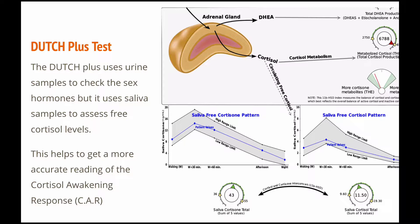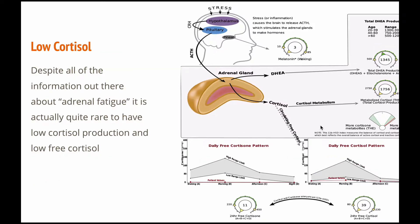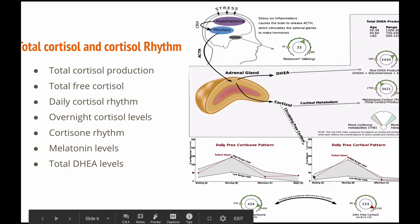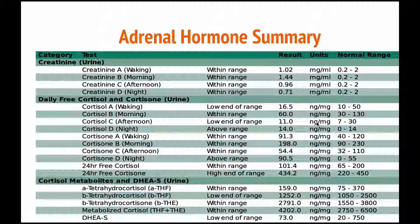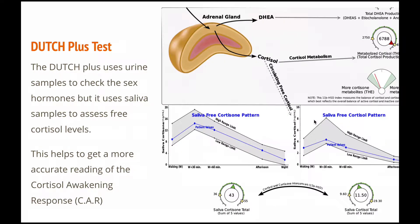The Dutch Plus measures the total cortisol production, but the free cortisol is measured with saliva. This gives us the opportunity to measure a sample at waking, 30 minutes later, 60 minutes later, and then later in the day. This cortisol awakening response is important when people have depression, anxiety, and those types of symptoms. The Dutch Complete still measures that but over a two-hour period. Personally, I prefer the Dutch Complete because when you do that very first sample in the morning, that's measuring the cortisol levels from the previous few hours — so you're still getting the overnight cortisol, which you miss with the Dutch Plus. The first to second sample gives us the cortisol awakening response. The Dutch Plus does it in a little bit more detail.